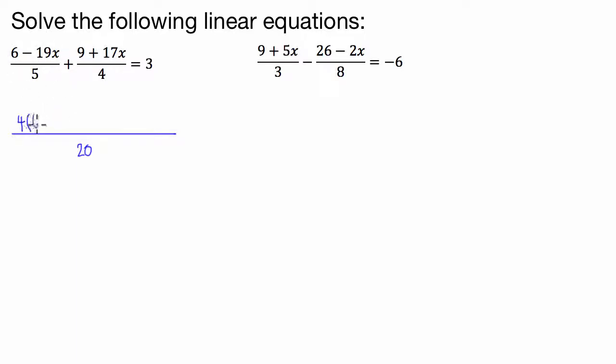So we've got 6 take 19x in the bracket. And that's being added to, the 4 has to be multiplied by 5, so I'm going to put a 5 there. And we have 9 plus 17x. And all of that is equal to 3. So now we have them all on the same base. What we can do in the next step is move the base over to the other side. So I'm going to times both sides by 20.